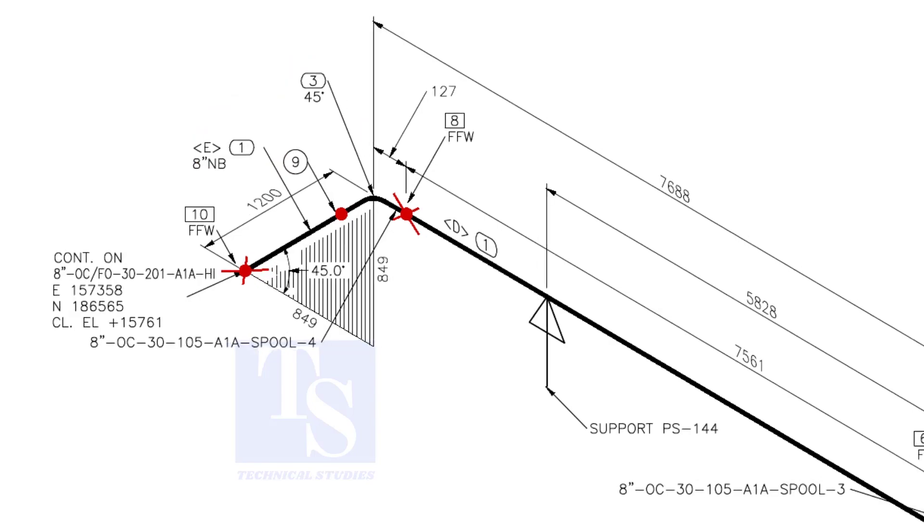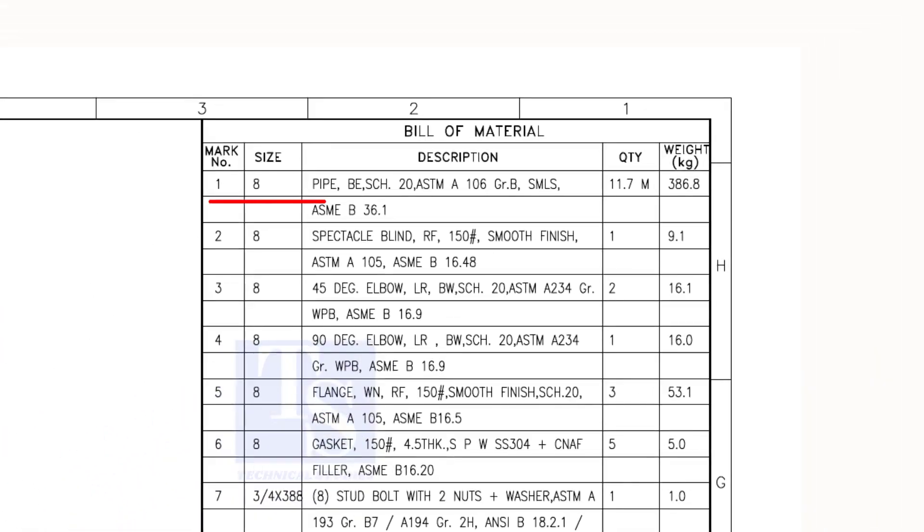Let us confirm in the material list. As per the list, item number 1 is 8-inch bevel end schedule 20 seamless pipe. Item number 3 is 45-degree long radius butt weld schedule 20 elbow.